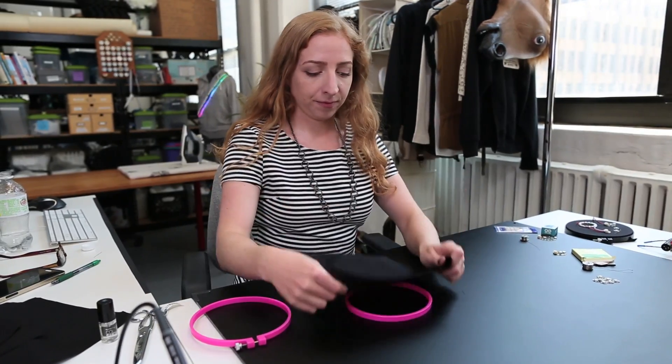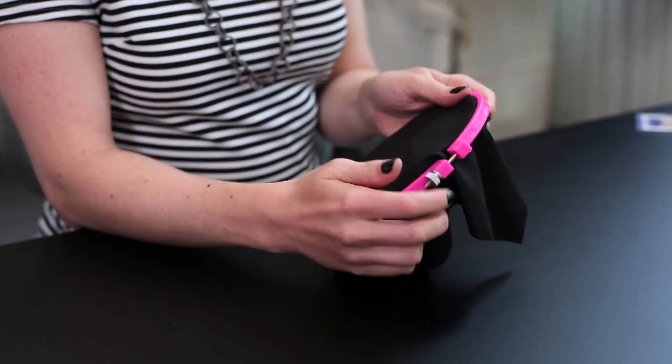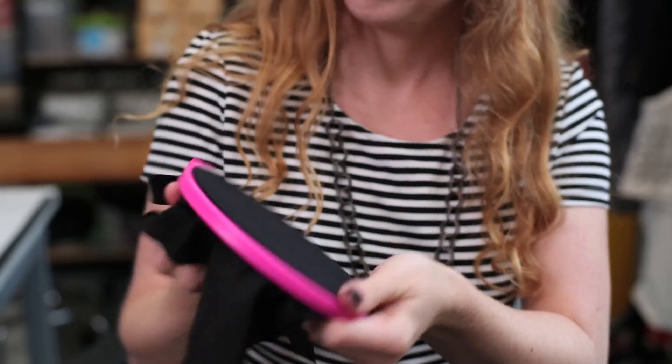Another important tool is an embroidery hoop. This will keep your fabric taut so it's easier to work with, resulting in a cleaner finished project. If you're working on a heavy fabric like a winter coat, you could get away without one.